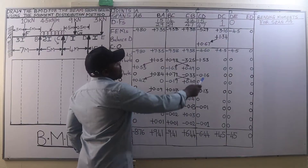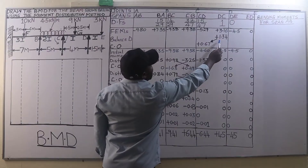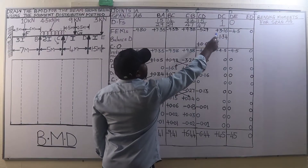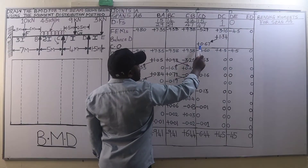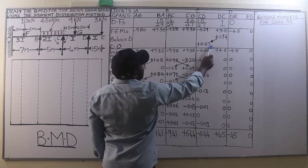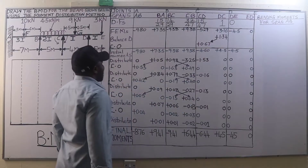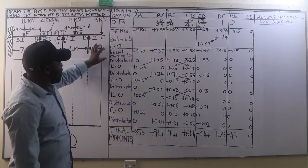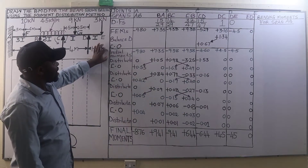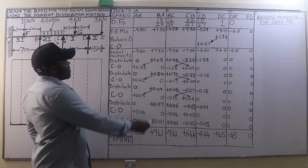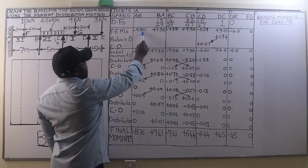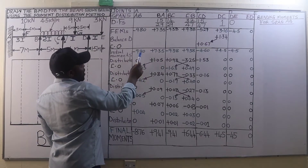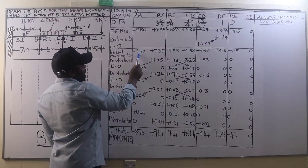After balancing we carry over, and remember the carry-over factor is one-half. So we carry half of 1.34 to joint C, which is 0.67. Then we write the initial moments — that is, the fixed end moments — again.